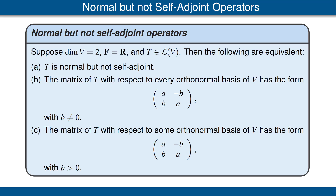The spectral theorem gives a complete description of normal operators on finite dimensional complex inner product spaces, and of self-adjoint operators on finite dimensional real inner product spaces. But we do not yet have a description of normal operators on real inner product spaces. That's what we aim to do in this video.